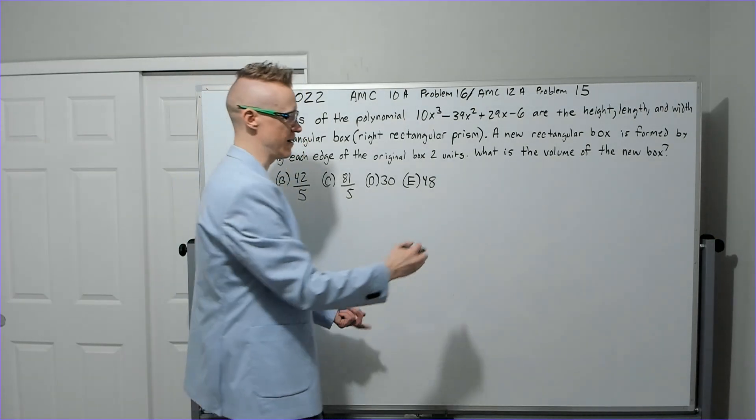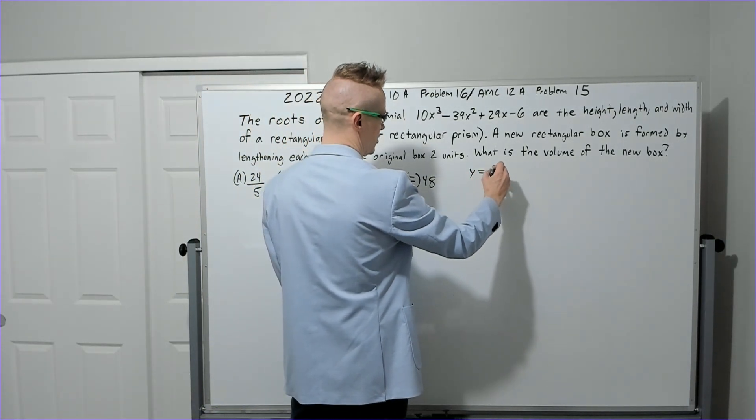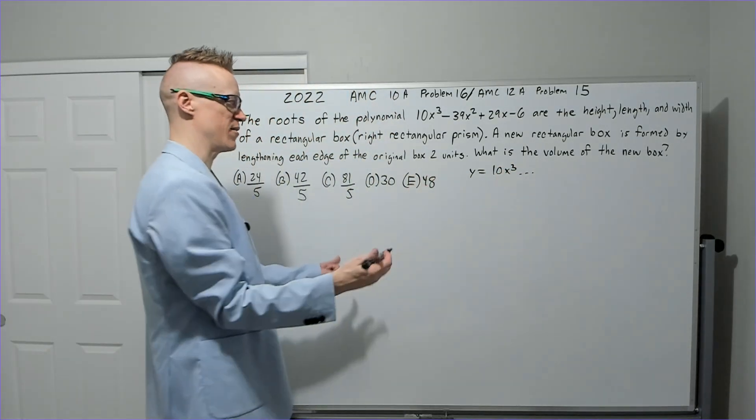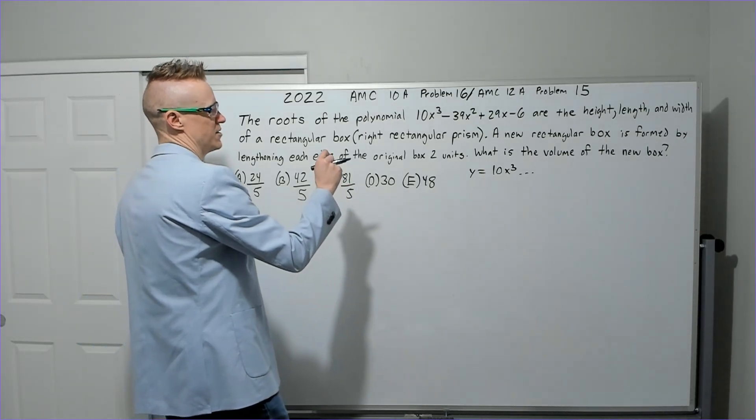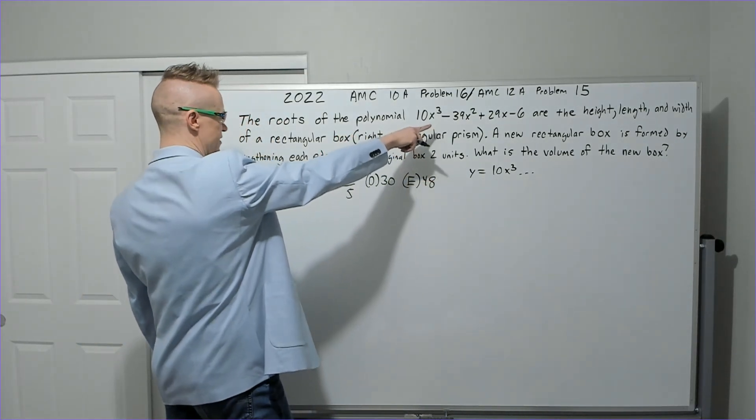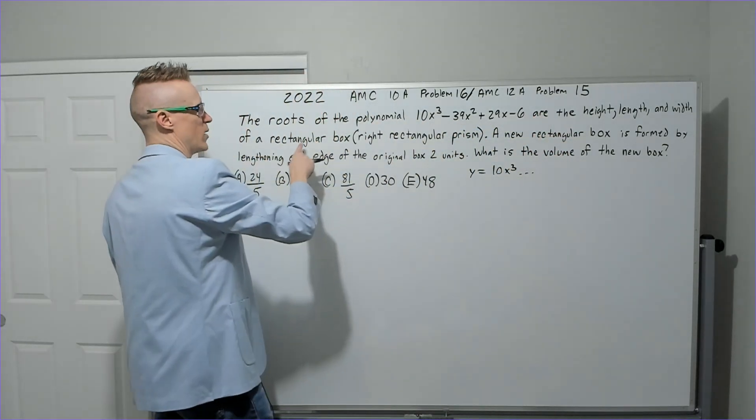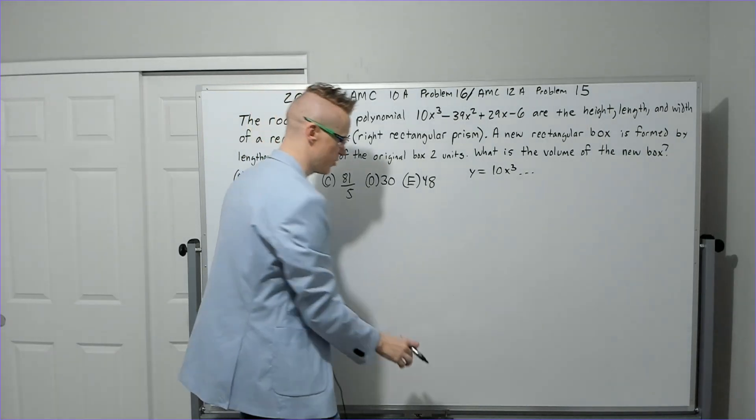It's going to be an x-intercept because essentially you have an equation y equals like that and you're making y zero, which is why they're called zeros. So here we go, we got roots of this equation. They are the height, length, and width of a rectangular box, which is a right rectangular prism.